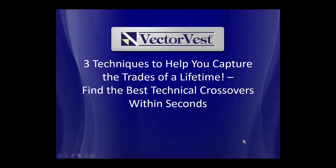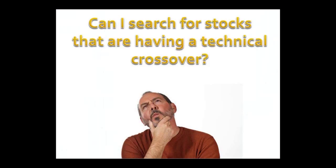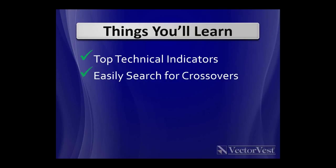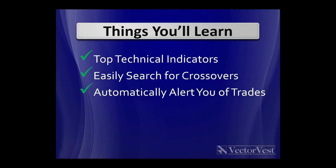I've been here at VectorVest for about 13 years, and in my first seven years I would talk to customers on the phone quite a bit. They would consider themselves technical traders, and the top question I would get was: can I search for stocks that are having a technical crossover? For a while my answer was no, but now not only is my answer yes, but today I'm going to show you how you can not only search for those technical crossovers, but how VectorVest can do it for you and send you the results no matter where you are. In today's webinar, you're going to learn several things. First, I'll show you how to use three of the top technical indicators. Second, I'm going to show you a way to easily search through stocks and within seconds find stocks meeting those patterns. And third, I'm going to show you how to set VectorVest to automatically alert you of trading opportunities so you don't even need to be near your computer to get those alerts.